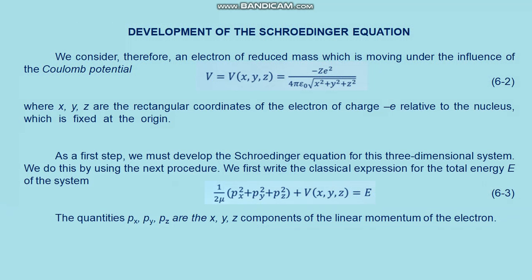Development of the Schrödinger equation: we consider an electron of reduced mass moving under the influence of the Coulomb potential, where x, y, z are the rectangular coordinates of the electron of charge minus e relative to the nucleus fixed at the origin. The square root in the denominator is just the electron-nuclear separation distance r. The nuclear charge is plus Ze; Z equals 1 for neutral hydrogen, Z equals 2 for singly ionized helium, etc.